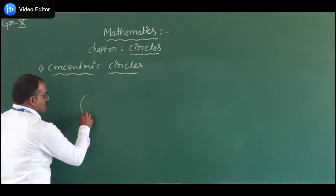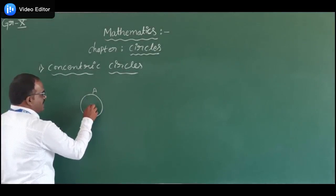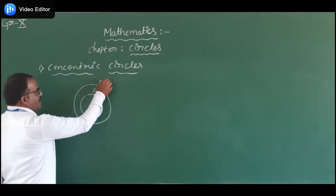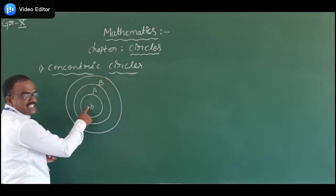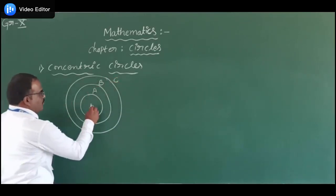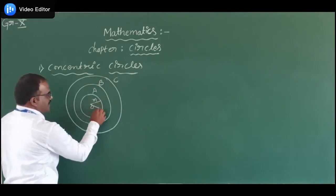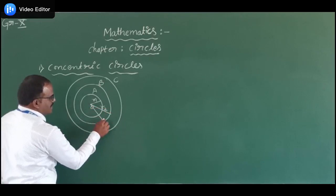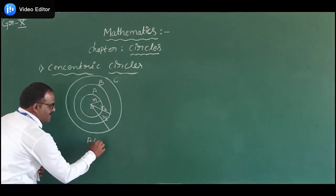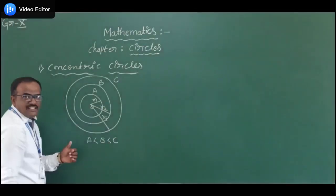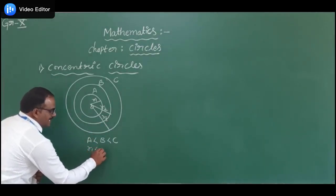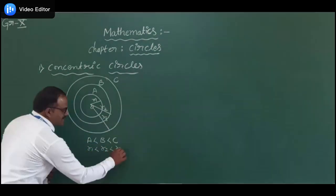This is the first circle A with center O. Another circle B which is also having center O. One more circle which is also having center O, with different radii. The radius of the first circle is R1, the second circle R2, and the third circle R3. Circle A is smaller than circle B, which is also smaller than circle C, because R1 is less than R2 which is less than R3.